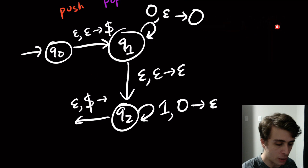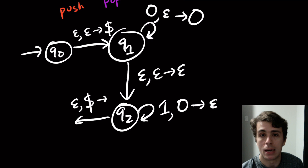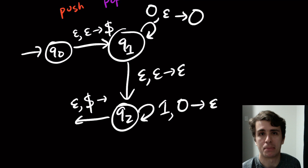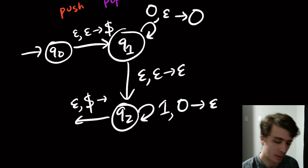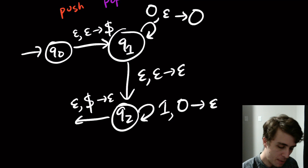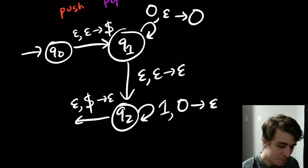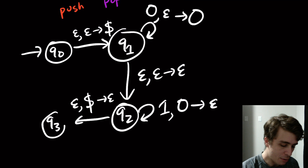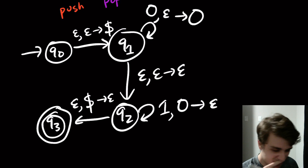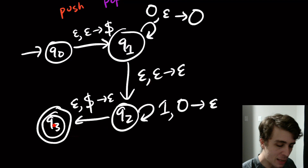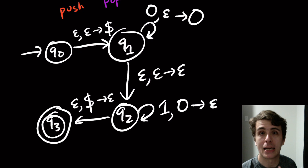As the final step, I have a transition from q2 that doesn't read anything, pops the dollar sign off the stack — the same character pushed at the very start — and we don't push anything. This leads to state q3, which is the accept state.